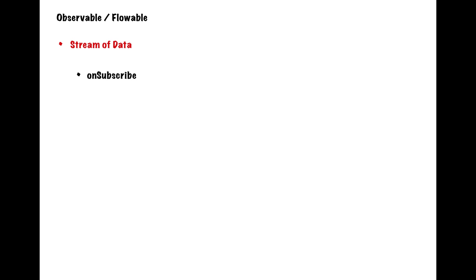Let's focus on observable first. Basically, this is a stream of data — more of a data packet. Think about this scenario: you are going to make a call to your server where you will be getting packets of data and you are not quite sure how long the data will be. As long as there is data in the packet, you will be getting that data. In that case, you have to use observable or flowable. In case of observable and flowable, you have these four callbacks in your observable chain: onSubscribe, onNext, onError, and onComplete.